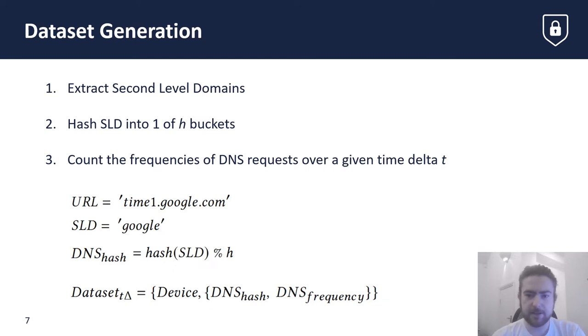By only considering the SLD, we effectively group similar domains, e.g. time1.google.com and time2.google.com, together, as they will hash to the same value. Once the hash of a particular endpoint is calculated, the hashed value is paired with the frequency with which that particular hash bucket appears in the DNS logs. This makes up the only features in our training dataset.